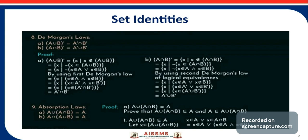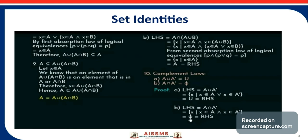Consider first that A union (A intersection B) is a subset of A. Let X belong to A union (A intersection B), which means X belongs to A or X belongs to A intersection B — that is, X belongs to A or (X belongs to A and X belongs to B). Using the logical equivalence P or (P and Q) equals P, we can write this as X belongs to A. So A union (A intersection B) is a subset of A.